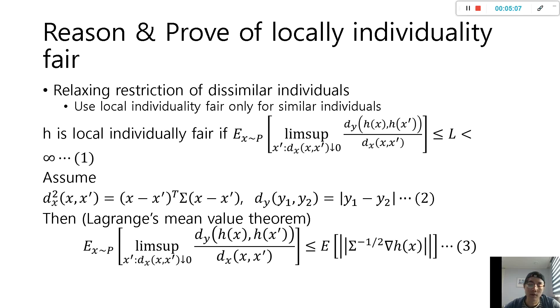In this algorithm, compared to Dwork's algorithm, this paper uses only locally individual fairness because the purpose is to restrict individuality fairness only for similar individuals. In equation 1 below, the limit of this line means it only restricts x and x prime where the fair matrix between those is less than epsilon. So it means this equation restricts only for similar individuals.